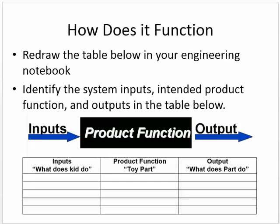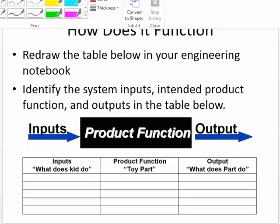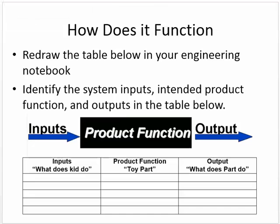Redraw the table below in your engineering notebook. Identify the system's inputs, intended product function, and output in the table below. So for example, this is what we're going to be doing in our homework today. Inputs. What does kid do? Push his car. Product function, the toy part. Well, this is the wheel and axle. What part, what does part do? It rolls.